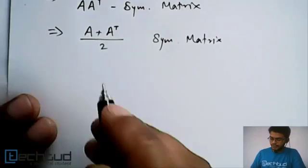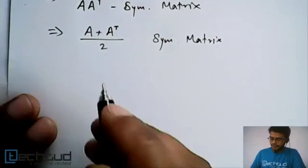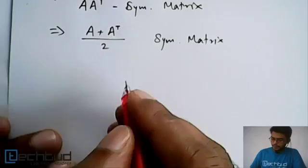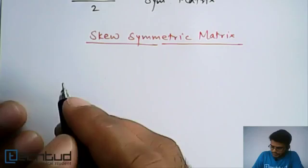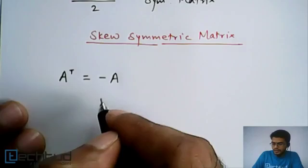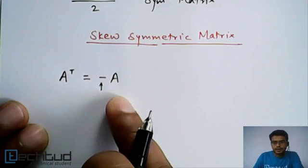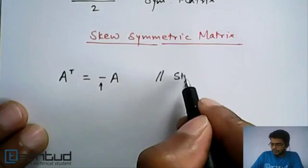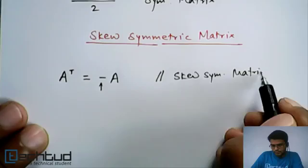Next type of matrix is skew-symmetric matrix. What is a skew-symmetric matrix? Similar to symmetric matrix, if the transpose of a matrix is equal to the negative of the original matrix, the difference being this negative sign, then we say this is a skew-symmetric matrix. Very simple — I will have an example here.